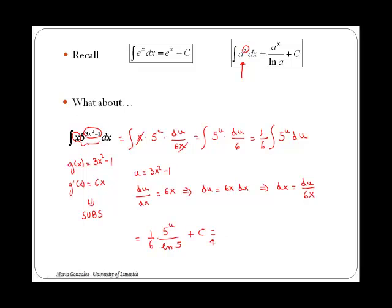If we bring the x back, then your final answer is going to be 1 over 6 by 5 to the 3x squared minus 1 over ln of 5 plus c.